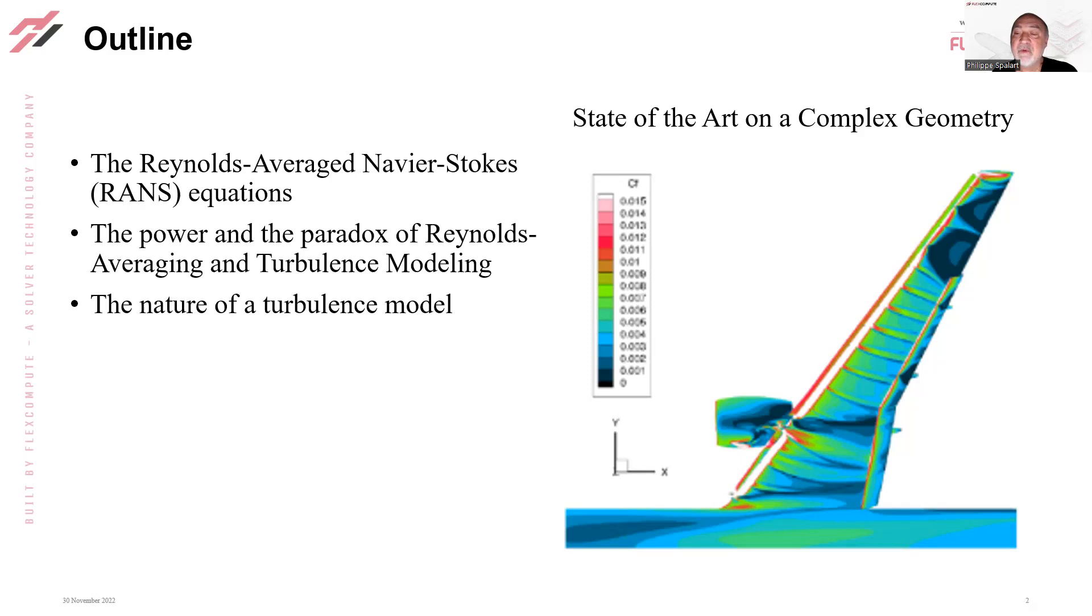We're asking the turbulence model to predict this very complex three-dimensional flow and to do a decent job in boundary layers around the slat brackets on the nacelle, on the fuselage very long, the boundary layer thickening in the corner region, and all that.